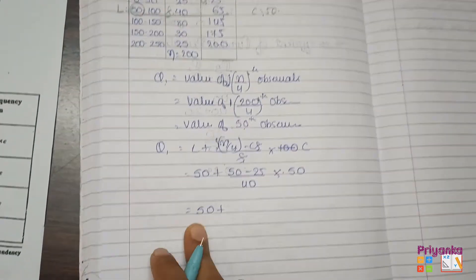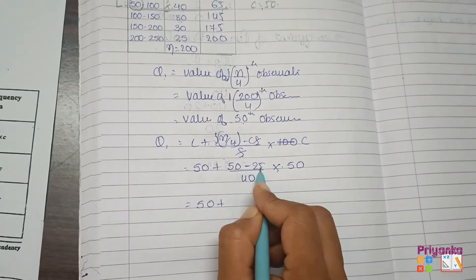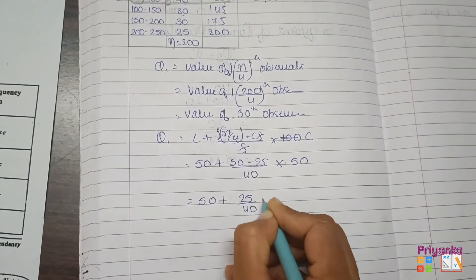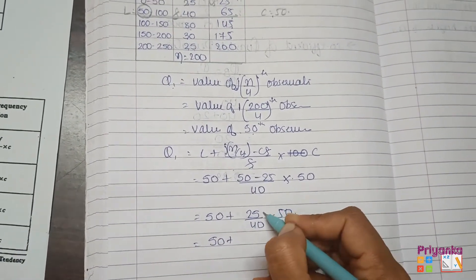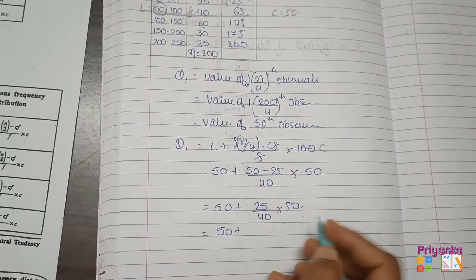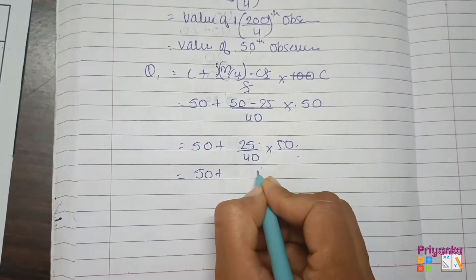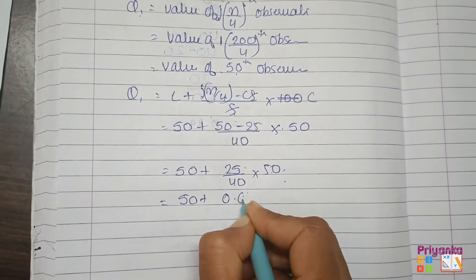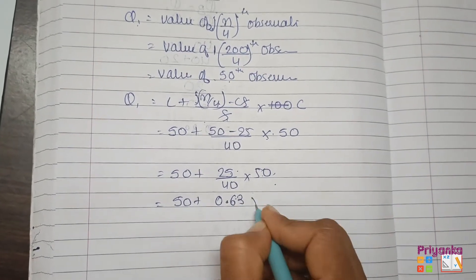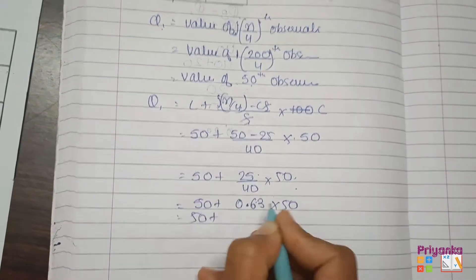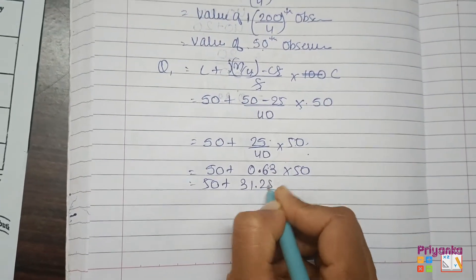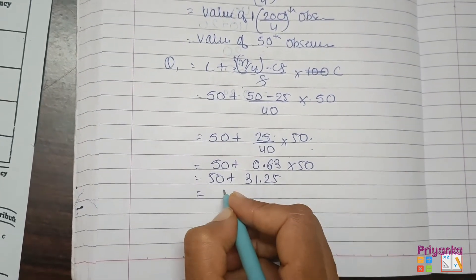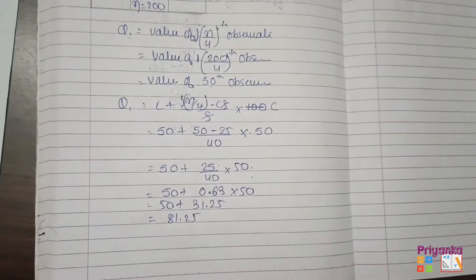25 divided by 40 equals 0.625. Multiplied by 50 gives 31.25. Adding to 50: 50 + 31.25 = 81.25. So Q1 = 81.25. Now we find Q3.